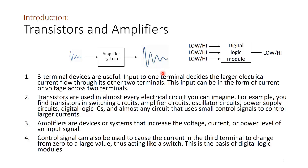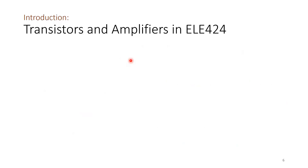A control signal can also be used to cause the current in the third terminal to change from zero to a large value, thus acting like a switch — this is the basis of a digital logic module. In our program, digital logic will probably be covered under digital logic fundamentals and integrated circuit design. For this analog electronics course, we will be looking at the amplifier system, starting with single-stage amplifiers.